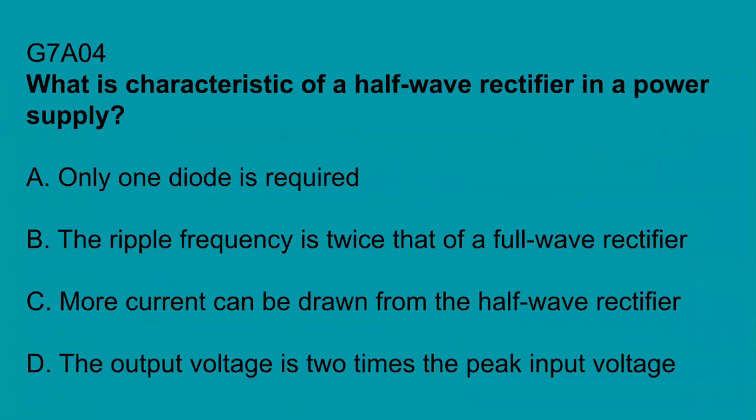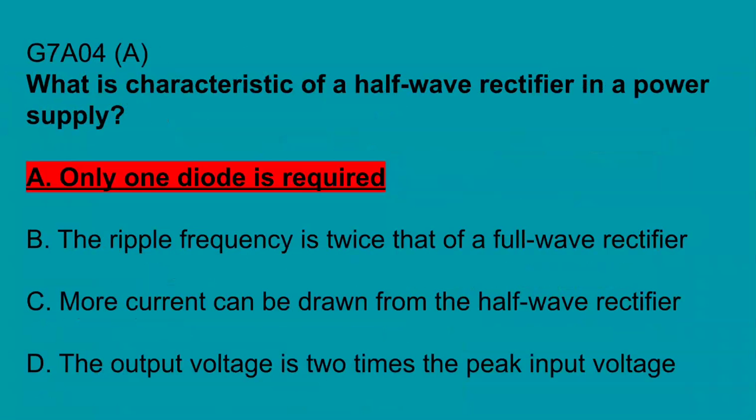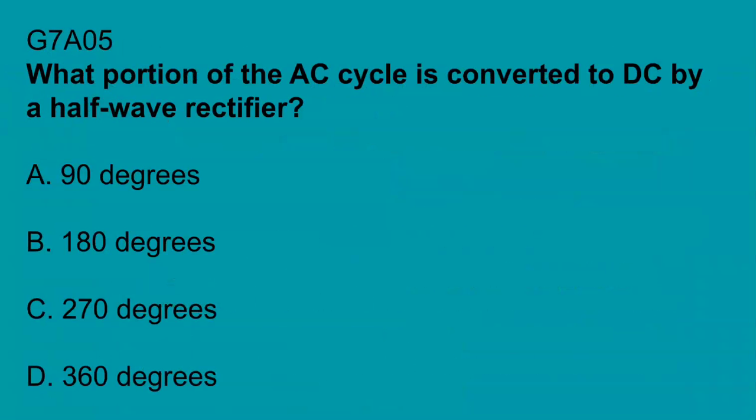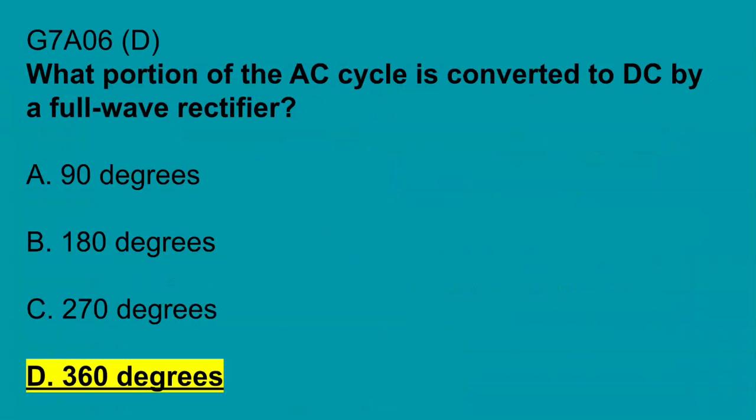G7A04, what is characteristic of a half-wave rectifier in a power supply? Only one diode is required. G7A05, what portion of the AC cycle is converted to DC by a half-wave rectifier? 180 degrees. G7A06, what portion of the AC cycle is converted to DC by a full-wave rectifier? 360 degrees.